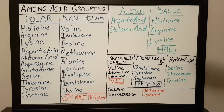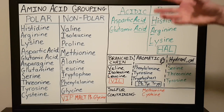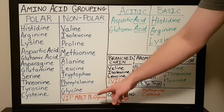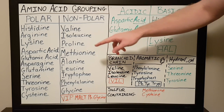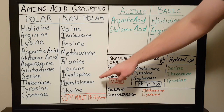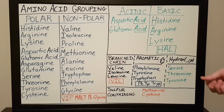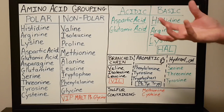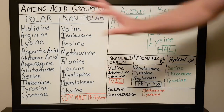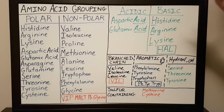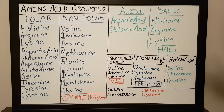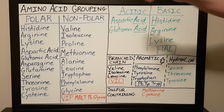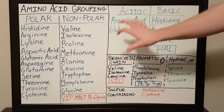An easy way to remember which amino acids are nonpolar is the mnemonic VIP MALT PG — glycine. VIP for valine, isoleucine, proline; MALT for methionine, alanine, leucine, tryptophan; PH for phenylalanine; and then glycine. Once you know the nonpolar amino acids, it's much easier to remember which ones are polar. If you hear an amino acid like histidine and it's not in that mnemonic, it has to be polar.